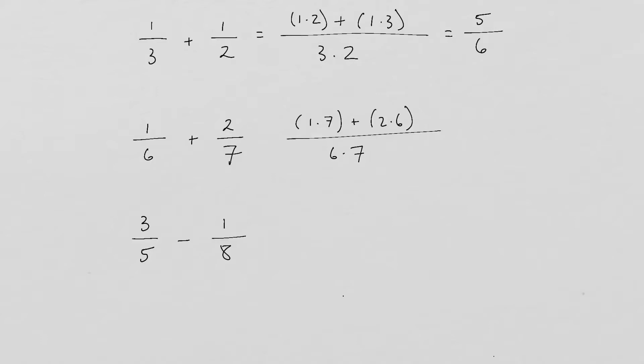So that gives us 7 plus 2 times 6 is 12. 7 plus 12 is 19. And 6 times 7 is 42.